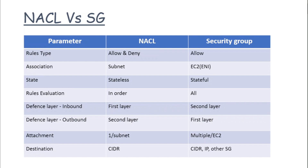Suppose there is inbound traffic coming in — NACL will be the first layer of defense. If you have allowed that traffic from NACL, then only it can reach the EC2 instance, and there the security group will act as a second layer of defense. On the other hand, if traffic is flowing from EC2 towards the internet (outbound), then the security group will be the first layer and NACL will be the second layer of defense.